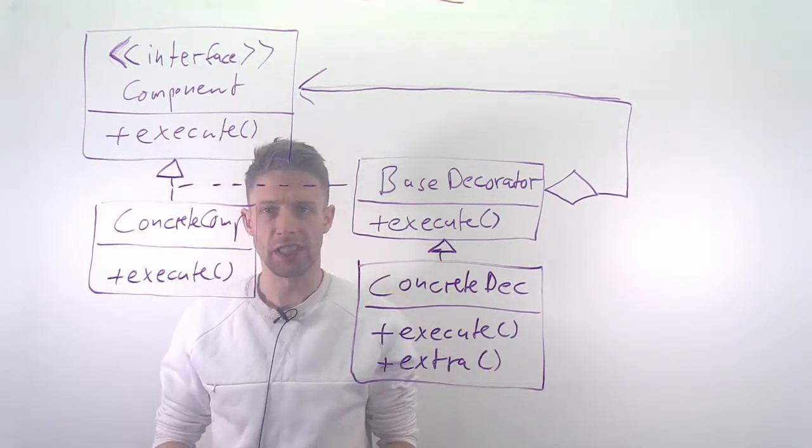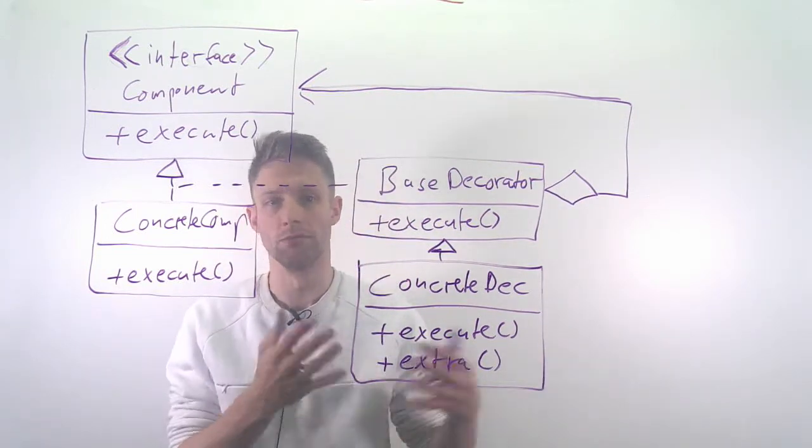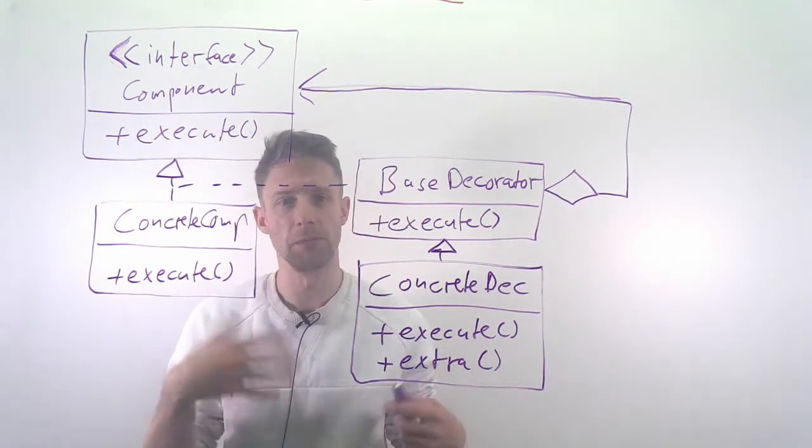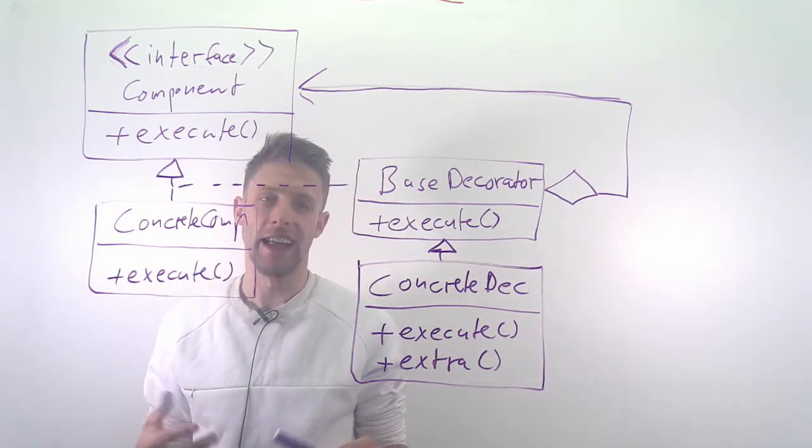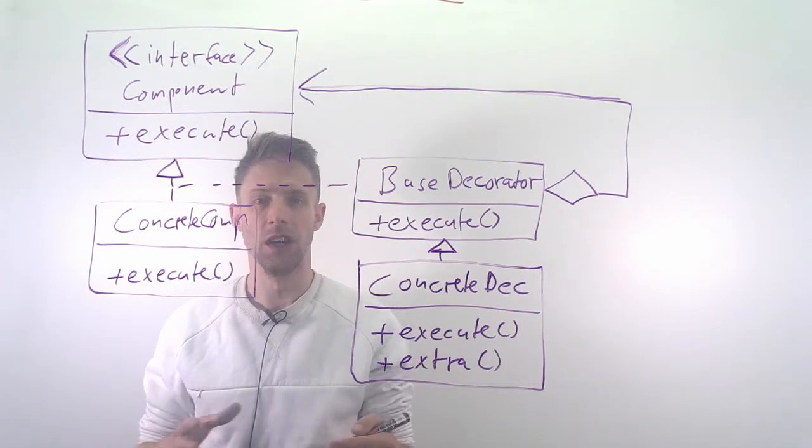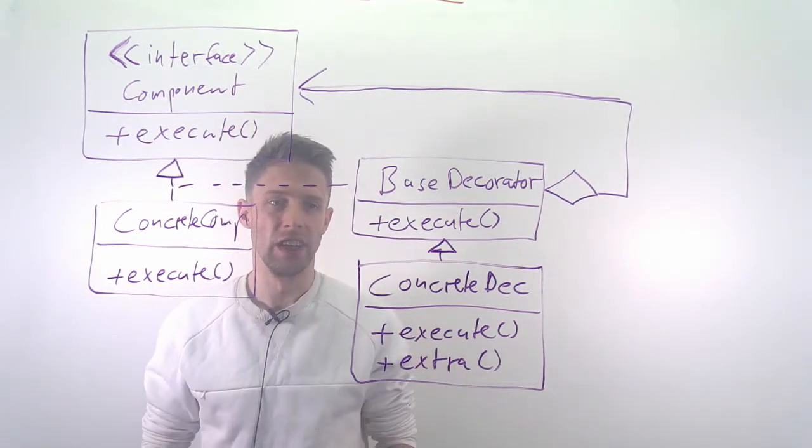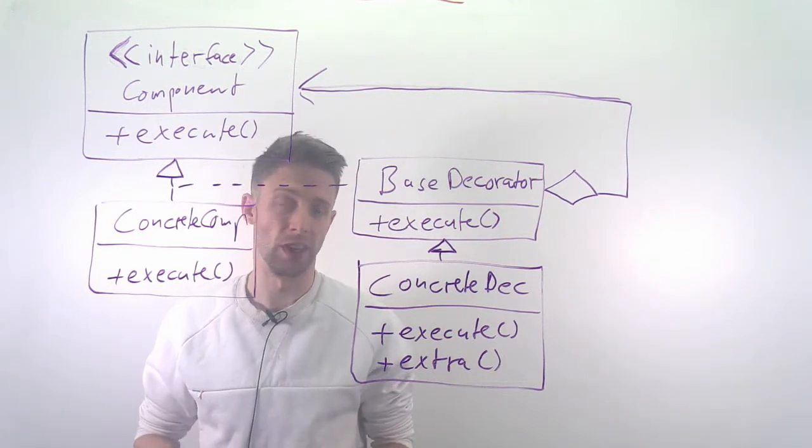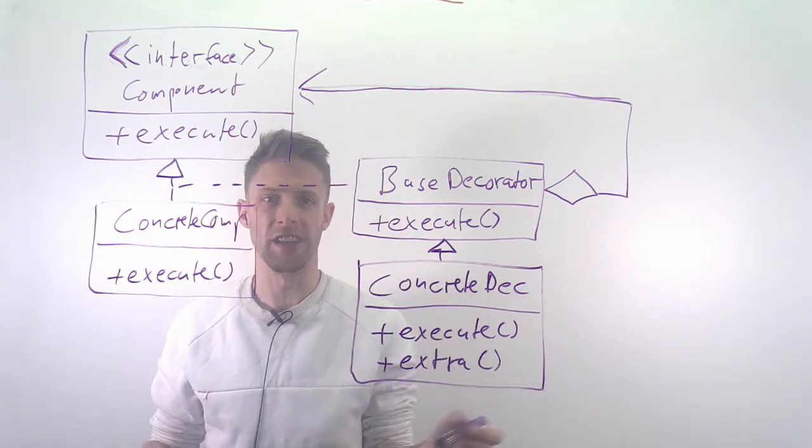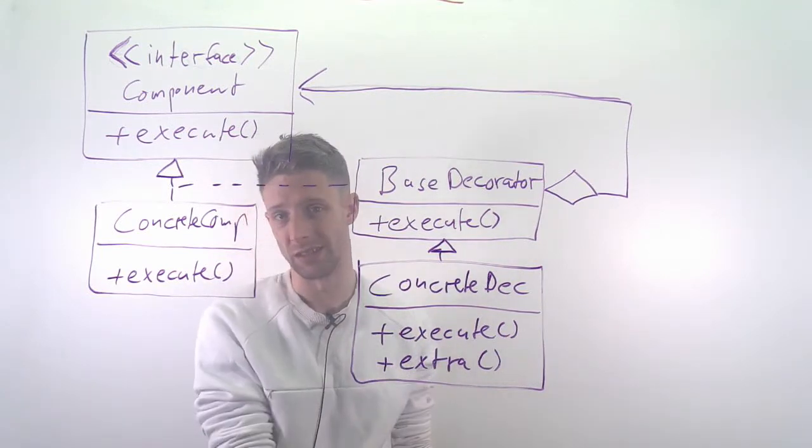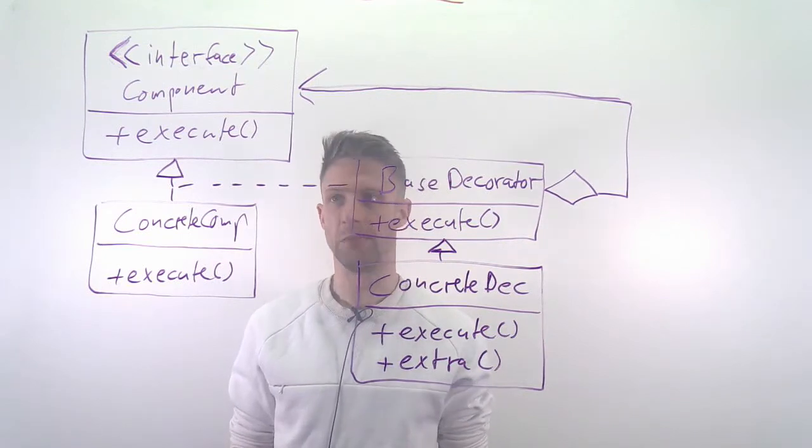Imagine, for example, you have a function, an algorithm that writes something to a file. It takes some input text or binary and writes it to a file. A common decorator would be to add functionality that buffers it so you don't get any issues during writing. Or maybe you want to add functionality that first encrypts it and then writes it to disk. That's the case for the decorator pattern.